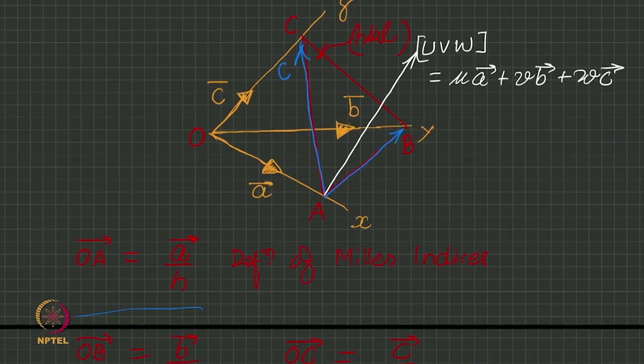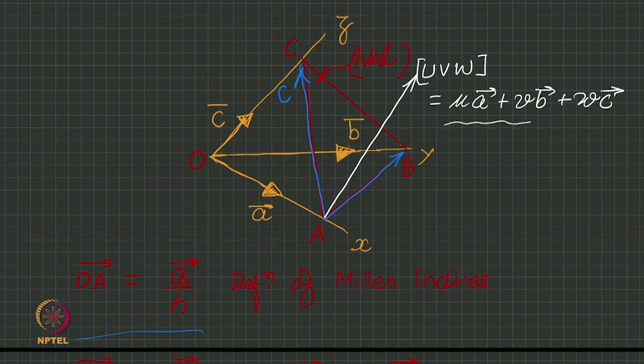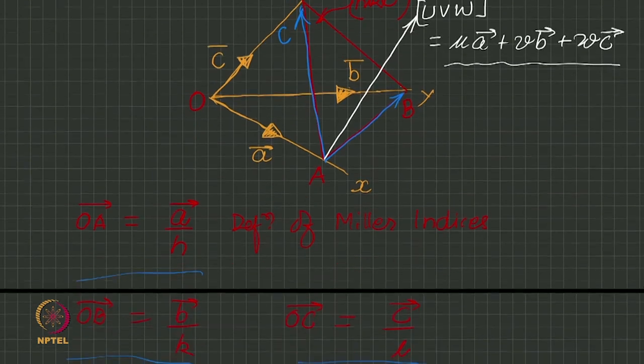If I have two non-parallel vectors AB and AC, and a third vector also is lying in the plane defined by AB and AC, what can we say from vector algebra? It's a linear combination of these two vectors.